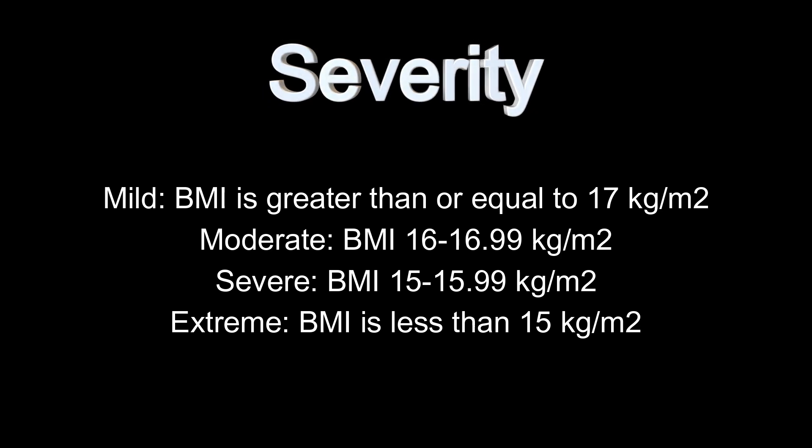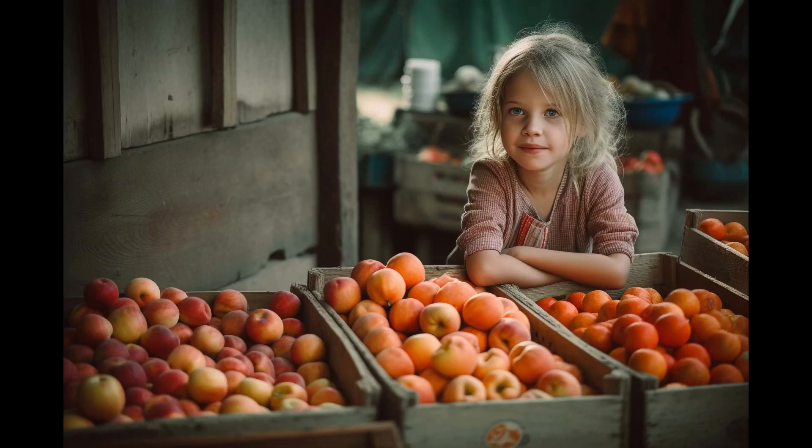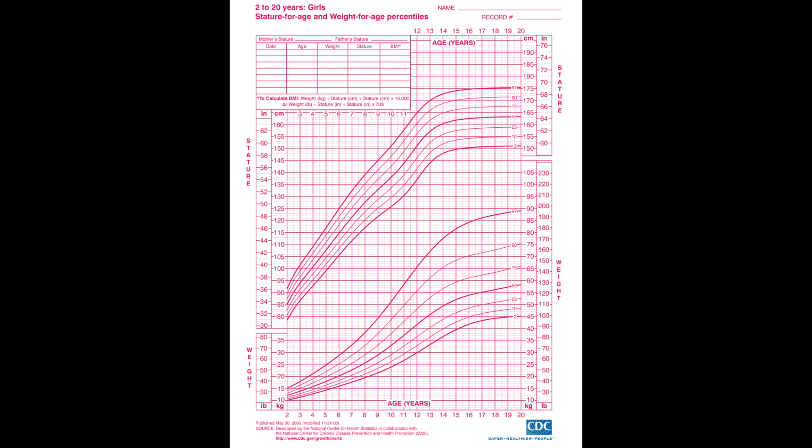The clinician will also want to specify the patient's current severity. For adults, current severity is determined by the World Health Organization. Mild severity is a BMI greater than or equal to 17 kg/m². Moderate severity has a BMI between 16 and 16.99 kg/m². Severe is a BMI of 15 to 15.99 kg/m², and extreme severity is a BMI less than 15 kg/m². It is more difficult to assess a child's severity using BMI because of the growth and development chart, which also needs to be considered.